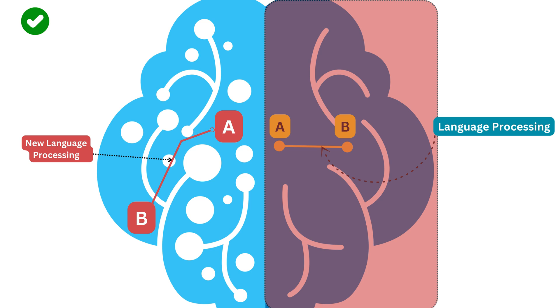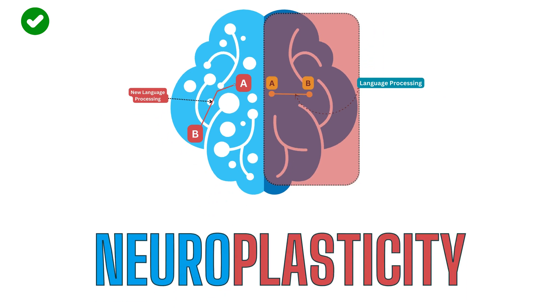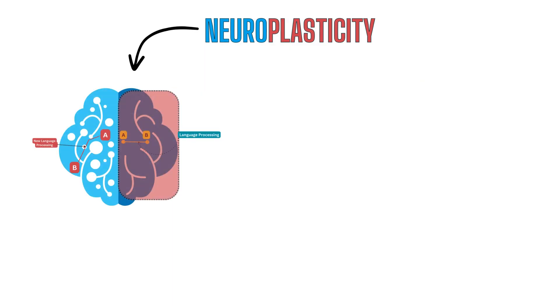This rerouting of signals is a fascinating example of neuroplasticity, the brain's remarkable ability to reorganize itself in response to changes or damage. Neuroplasticity comes in various forms, but in this case, it's known as compensatory neuroplasticity, where the brain compensates for lost functions by reallocating resources and rewiring neural connections.